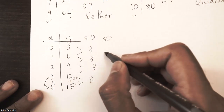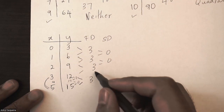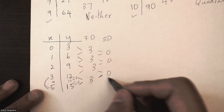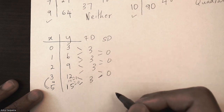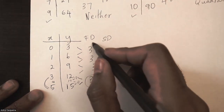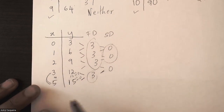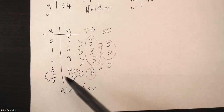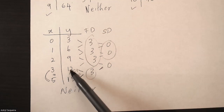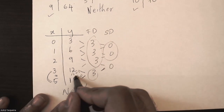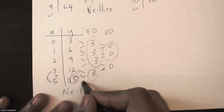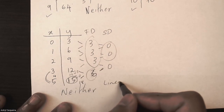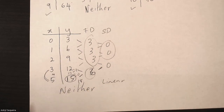Looking at second differences, they appear to be 0, 0 — but again, the last difference isn't valid because of the uneven jump. Even though it looks the same, it technically should be different. So this equation is neither. There are many trick questions like this that can actually be linear or quadratic — you just have to watch for a jump in the x values. For example, if that last y value were 18 instead of 15, the first difference would be 6 and the equation would have been linear.